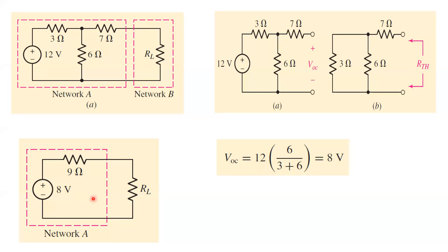The equivalent circuit is now a simple network with load resistance RL connected in series with Rth and the Thevenin's equivalent voltage Vth. The current through RL in the original complex circuit and in this simplified equivalent circuit will be the same. This is how we verify Thevenin's theorem in a network lab.